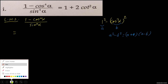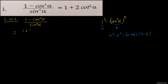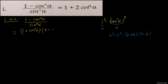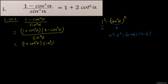We will consider 1 as a and cos square alpha as b. It will be like a square minus b square, where the formula of a square minus b square is (a plus b)(a minus b). Similarly, here also we can write 1 plus cos square alpha into 1 minus cos square alpha, divided by sin to the power 4 alpha. This equals 1 plus cos square alpha in one bracket, and in the next bracket 1 minus cos square alpha. But 1 minus cos square alpha equals sin square alpha, so one sin square alpha can be cancelled.